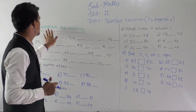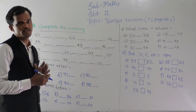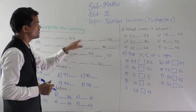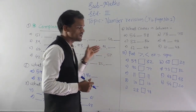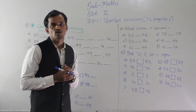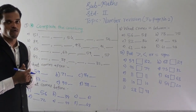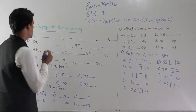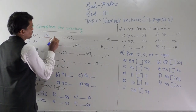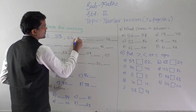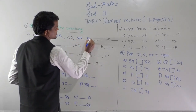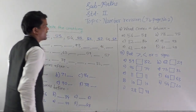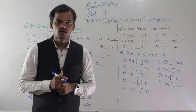The first question is counting — you have to complete this counting. The first number is 51, here 54 and 58. The numbers are becoming bigger, so this is forward counting. After 51, which number comes? That is 52. Write here: 52, 53, 54, 55, 56, 57, 58. Like this you have to complete the forward counting.